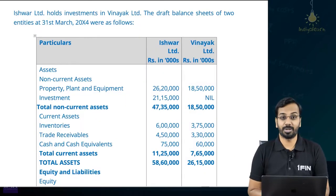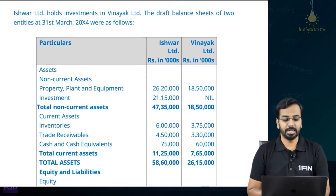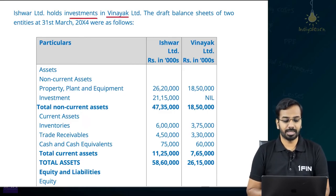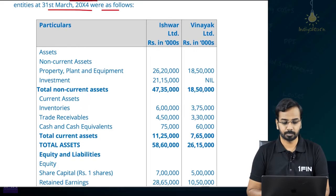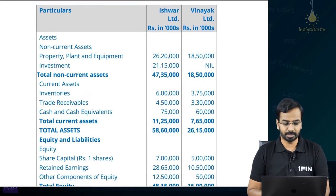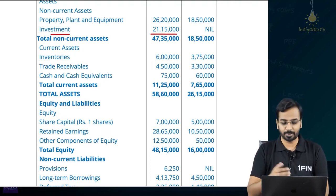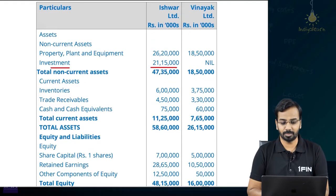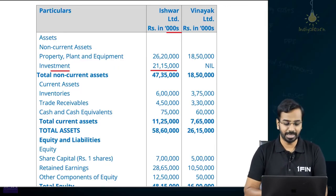Let us now have a look at another question, this is from Norma 23 RTP — a very important question because of the complexities involved. Ishwa Limited holds investment in Vinayak Limited. The draft balance sheet of the two entities at 31st March of year 4 has been given. You have all the assets, you have the liabilities. One important thing — the investment is 2115. We need to see the breakup as per the additional information. Though these numbers are big, they are still in thousands, so while calculating you have to be extra careful.